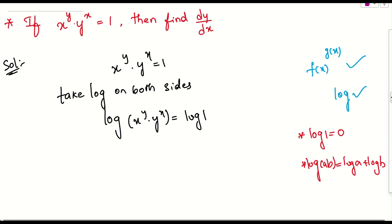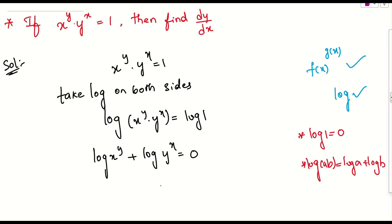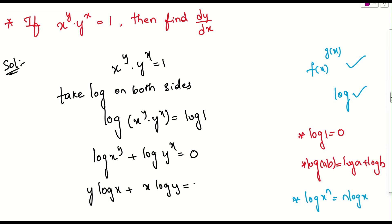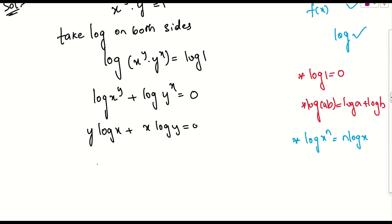Applying this formula: log a, where a is x power y, plus log b, where b is y power x, equals log 1 which is 0. We also have the formula log(x^n) equals n times log x. Applying that, we get y times log x plus x times log y equals 0.